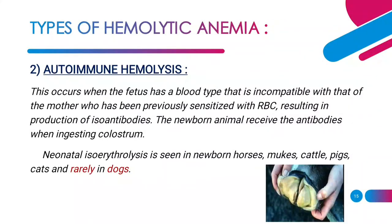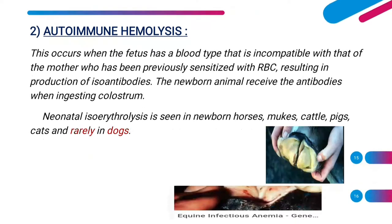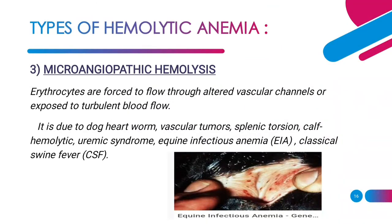Hemolytic anemia may also be due to autoimmune hemolysis, seen when the fetus has a blood type incompatible with that of the mother who has been previously sensitized with RBC, resulting in production of isoantibodies. The newborn animal that receives these isoantibodies when ingesting colostrum develops hemolytic anemia. It is seen in newborn horses, mules, cattle, pigs, and rarely in dogs. Microangiopathic hemolysis happens when RBCs are forced through an altered vascular channel or exposed to turbulent blood flow, causing breakage of the RBC membrane. It is seen in dogs with heartworm disease, vascular tumors, splenic torsion, calf hemolytic uremic syndrome, equine infectious anemia, and classical swine fever.